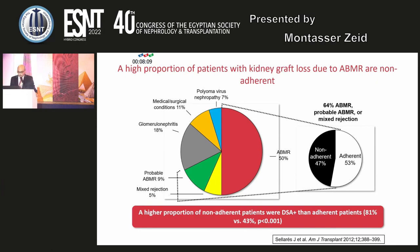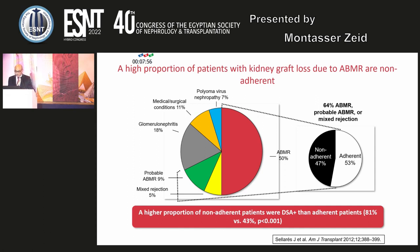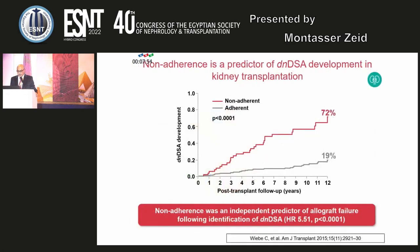Among causes of graft loss, 50% are due to antibody-mediated rejection, and non-adherence is responsible for about 47% of patients with antibody-mediated rejection. Non-adherence is a predictor of de novo DSA development in kidney transplantation, and was found to be an independent predictor of allograft failure following identification of de novo DSA.